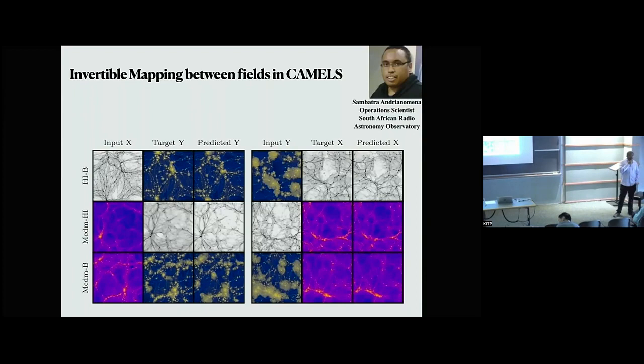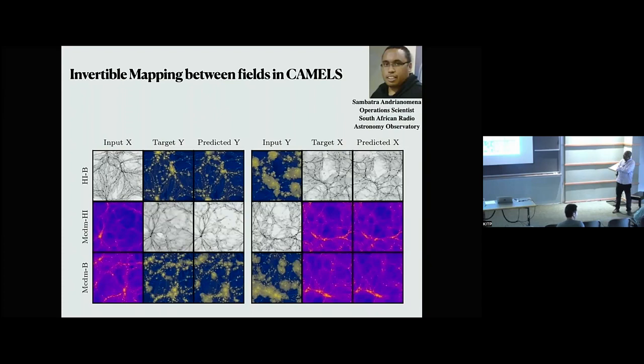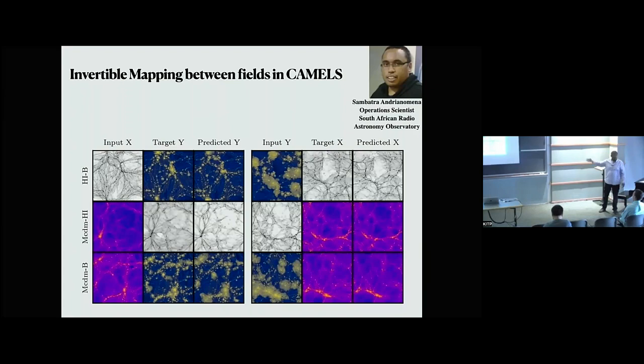A final question: have you thought about going from a fast approximate simulation like particle mesh to CAMELS-like fields? Sultan calls it a great idea they haven't tried yet. The nice thing is that once the model is trained, it runs very fast — even in a Jupyter notebook — and since particle mesh can already run in about a second, you could potentially get approximate CAMELS-quality fields in a second. Sultan agrees this would be a great project.